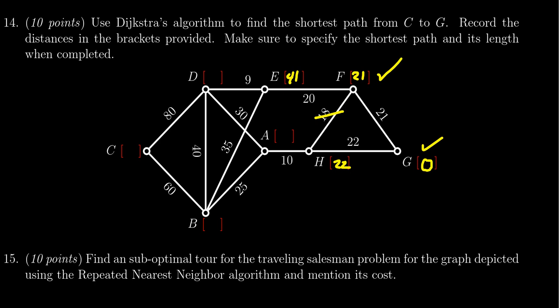The next smallest number is H right here. We've already decided going through F would be slower because we already have a faster path from F to G. So the only one we need to visit would be A right here. A gets to H by 10 more, so 10 plus 22 gives us 32. That finishes off H for us.